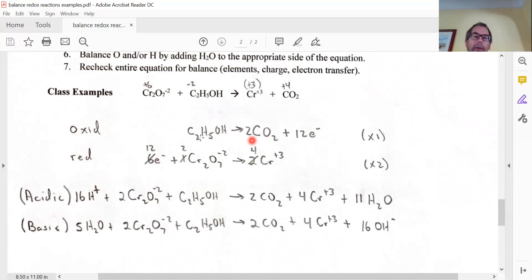Okay, now I'm going from minus two to plus four for each one. Well, minus two to plus four is a movement of six electrons, but since there's two of them, it's going to be 12 electrons lost in this process, in this oxidation process.